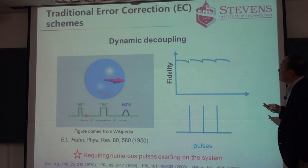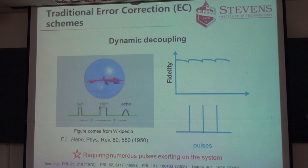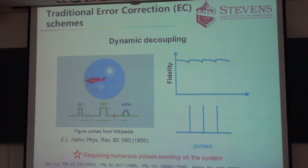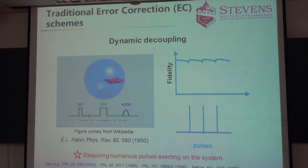Just briefly going through the traditional error reduction schemes. This one is called dynamic decoupling, and Professor Vaughn also has many papers on these things. Essentially you apply actual pulses to the quantum system, and eventually you can control the system. But the question is you use a lot of pulses. Also, the current scheme is only limited to a few qubits, not really like a thousand qubits. In principle you can do that, but technically it's difficult.